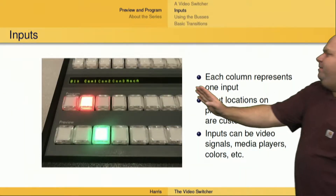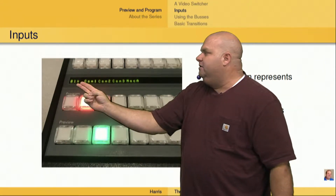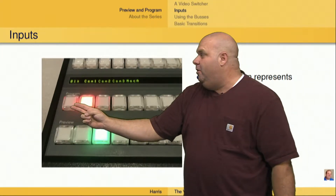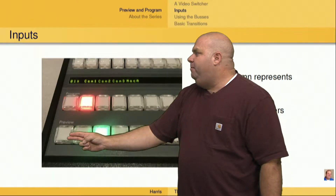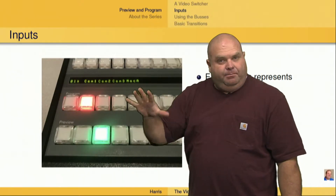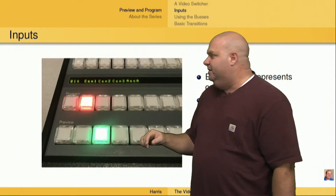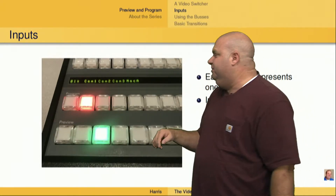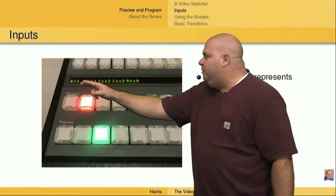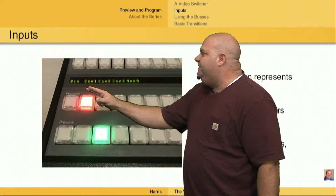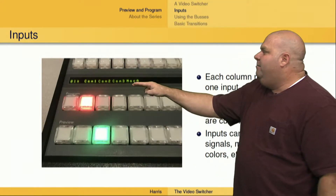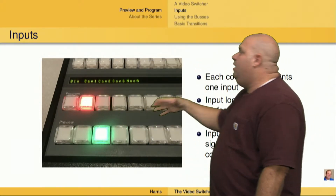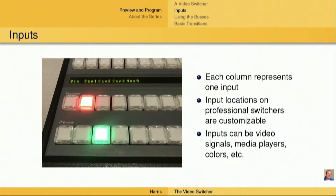We've got inputs, which are represented by columns on the switcher. So this one right here is marked black — BLK — which means that this button on the program bus would be to bring black to program, meaning the output of the switcher would display black. The locations of inputs on the switcher are customizable, meaning this says black, this is cam one, cam two, cam three, this one's labeled MAC A, but we could just as easily rearrange them. We could not have black on here at all. It's essentially totally customizable as far as the location of the inputs on that switcher.